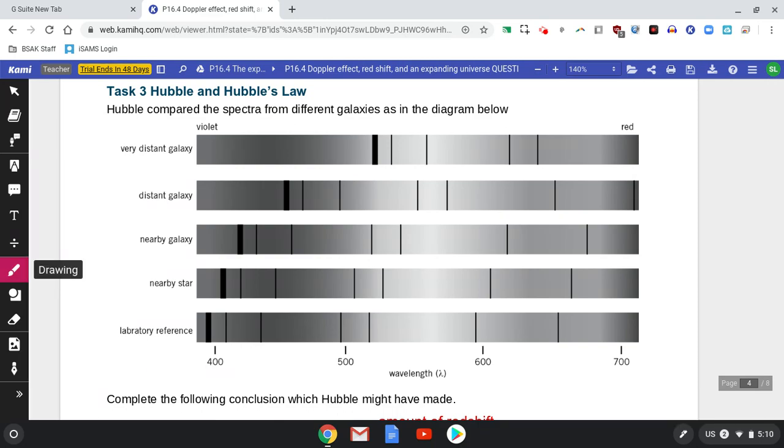The speed of galaxies moving away from us depends entirely on how far away it is. So this is the fastest and this is the slowest.